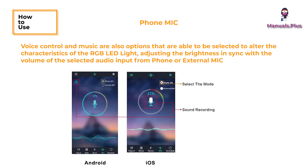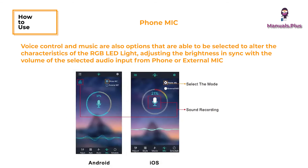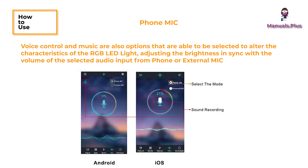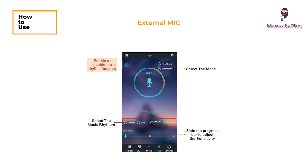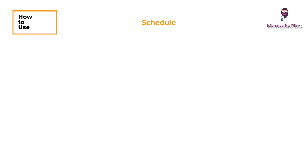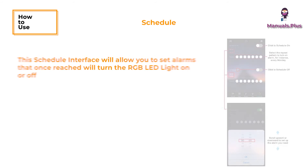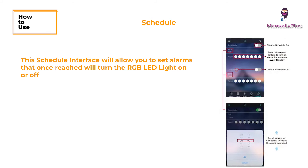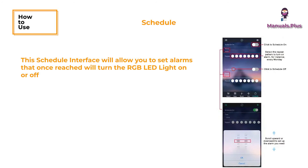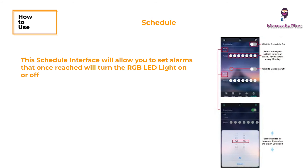The brightness syncs with the volume of the selected audio input from the phone or an external mic. You can enable or disable the rhythm function, select the music rhythm, and slide the progress bar to adjust the sensitivity.